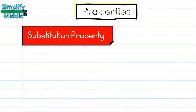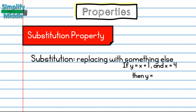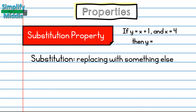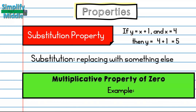Now let's look at another property: the substitution property. To substitute just means I'm going to be replacing something with something else. In this example, if y equals x plus 1 and x equals 4, then y equals — instead of x, I'll write what x is, which is 4 — so y equals 4 plus 1, which is 5.